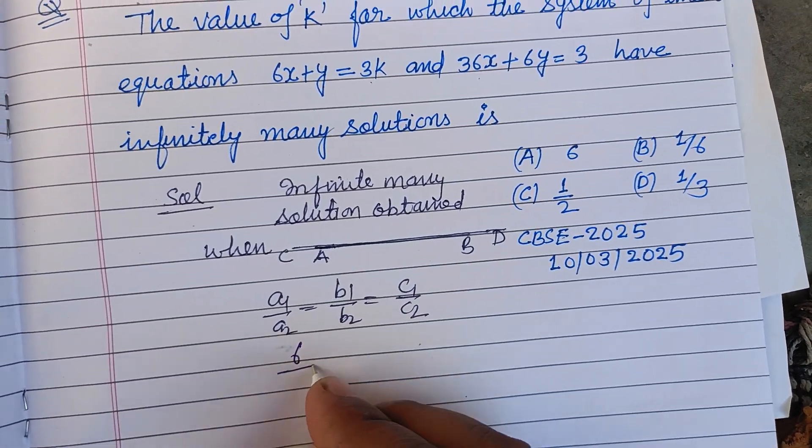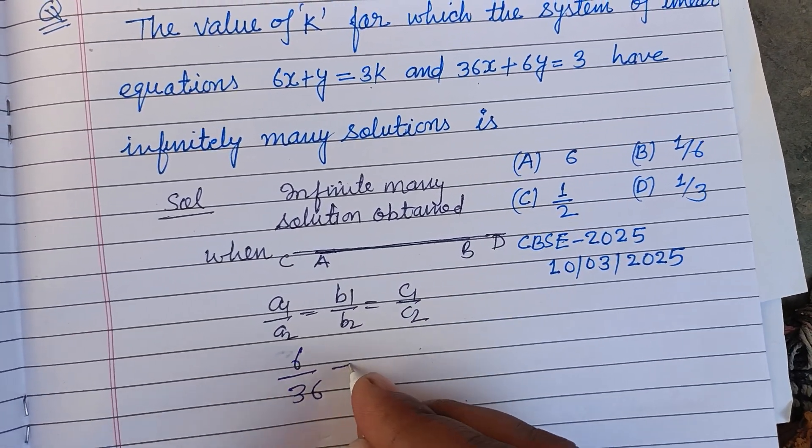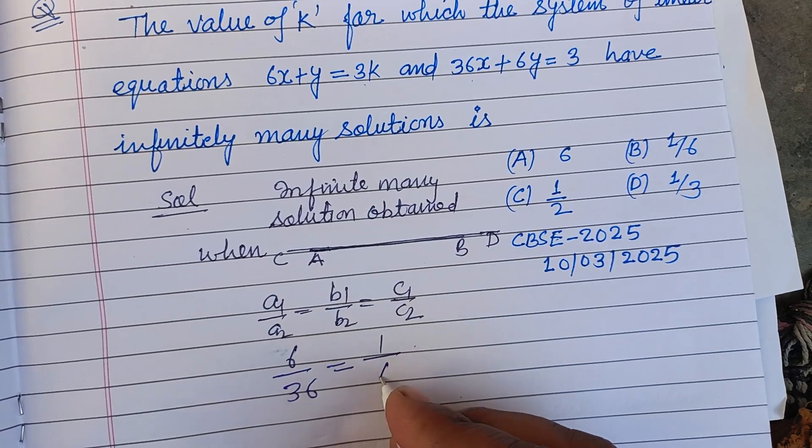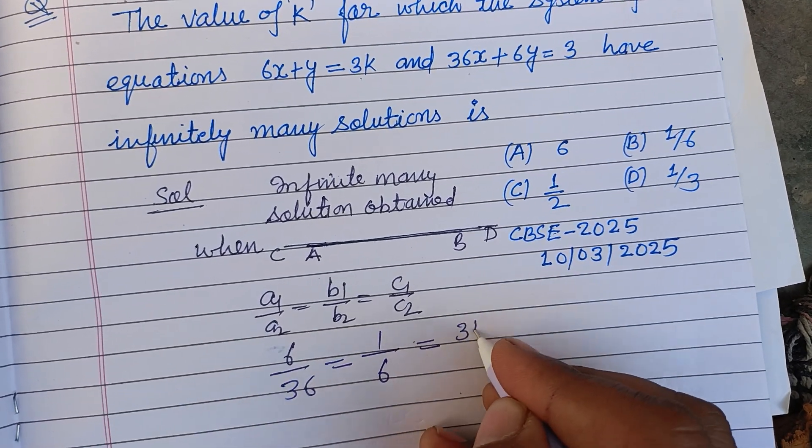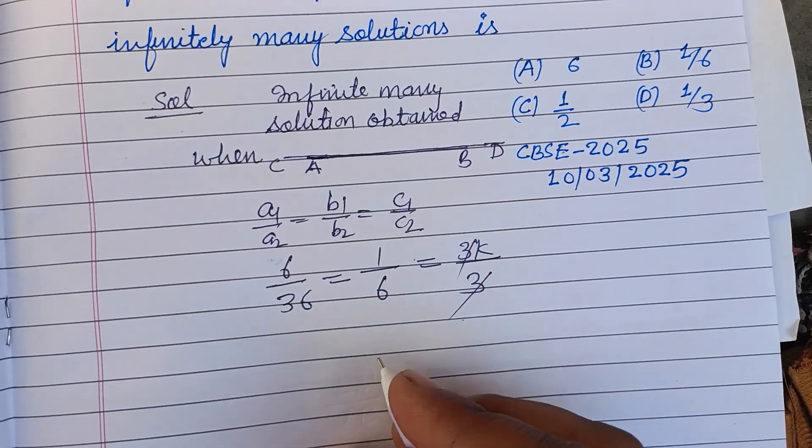So putting these values: 6/36 = 1/6, and this is 3k/3. The 3s cancel.